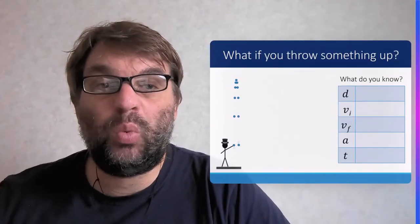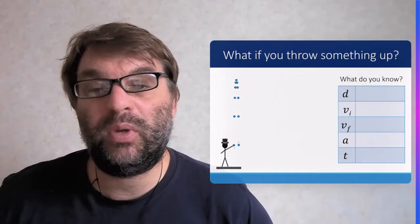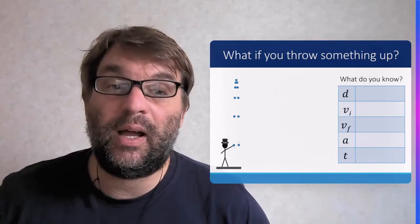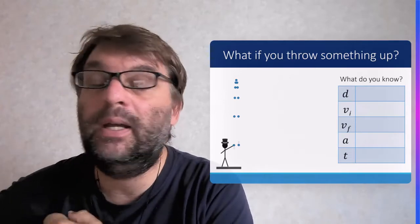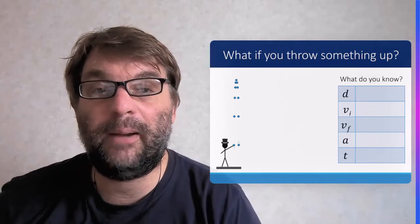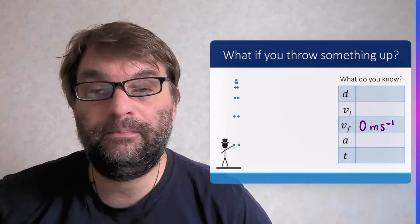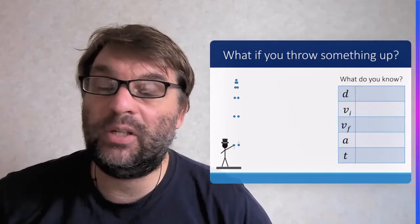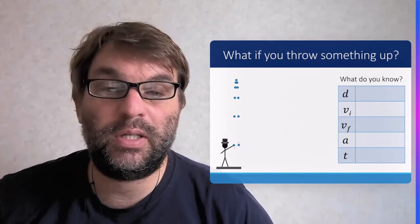Another case is, what if you throw something up? Again, we don't know the distance, but we could possibly calculate that using kinematic equations. We now don't know the initial velocity, because you are actually physically throwing the ball up. But we do know that the final velocity at the top of the motion is going to be zero meters per second. It's going to stop before it comes down again. And again, the acceleration is minus 9.81 meters per second per second.